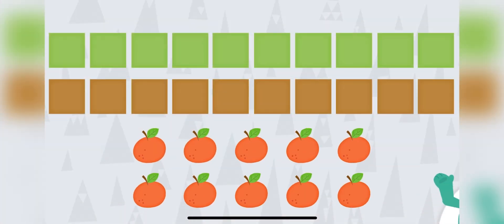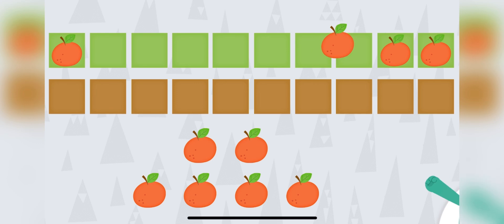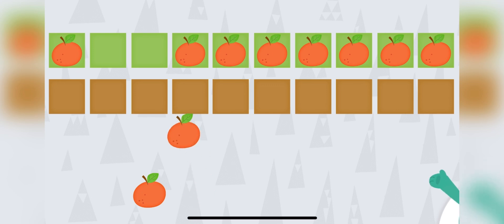Drag ten fruits to the top squares. One, two, three, four, five, six, seven, eight, nine, ten. You dragged ten fruits to the top squares.